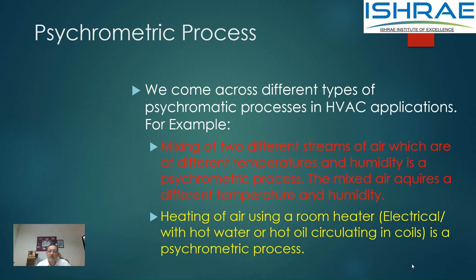Heating of air in winter — we use room heaters. These room heaters could be electrical heaters, or they could be based on water heated with the help of a boiler or solar water heater. If that water circulates through a coil inside a room, or hot oil heated electrically circulates inside a coil placed in the room, air will get heated up. This heating of air, where the temperature rises, is a psychrometric process.